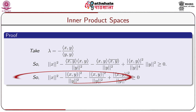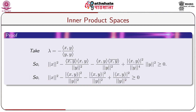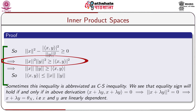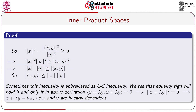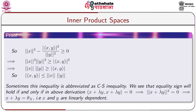After simplification we get norm of x squared minus modulus of ⟨x, y⟩ squared divided by norm of y squared is greater than or equal to 0. This implies norm of x squared times norm of y squared is greater than or equal to modulus of ⟨x, y⟩ squared. So norm of x times norm of y is greater than or equal to modulus of ⟨x, y⟩, establishing the Cauchy-Schwarz inequality. Sometimes this is abbreviated as the CS inequality.